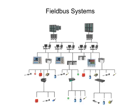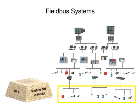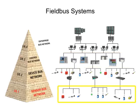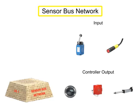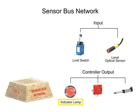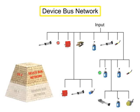Fieldbus industrial networks can be broken down into four levels, each with increasing levels of complexity. The most basic level is the sensorbus network. Sensorbus networks are the least complex of networks developed for industrial application. In these networks, multiple basic field devices like limit switches or level optical sensors are connected to one network cable. The sensorbus network is also capable of transmitting output signals from the controller over one cable to indicator lamps, alarms, or other actuator devices.